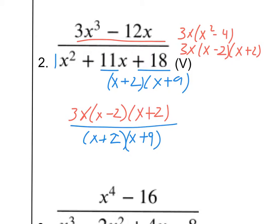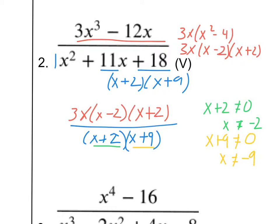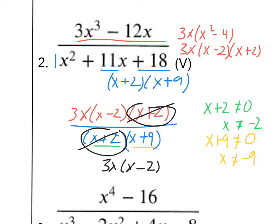Once we have factored, we've got to find some excluded values. We're going to base those on the bottom. X plus 2 cannot equal 0, which means X cannot equal negative 2. And X plus 9 also cannot equal 0, which means X cannot equal negative 9. Those are our excluded values. Finally, we come to canceling — looking for things that are the same in the top and the bottom. I've got an X plus 2 in both, leaving me with a final answer of 3X times X minus 2 on top, and X plus 9 on the bottom.